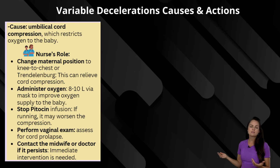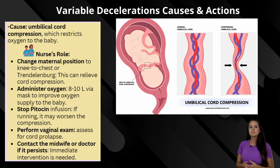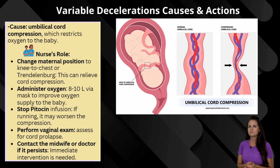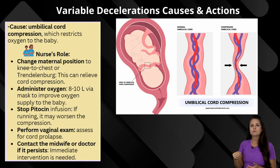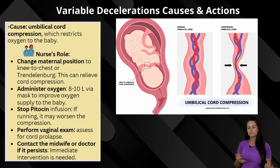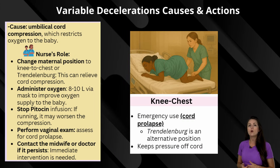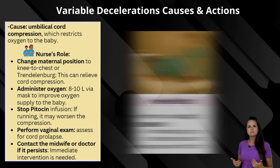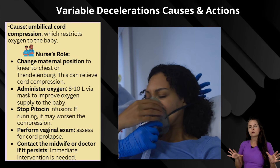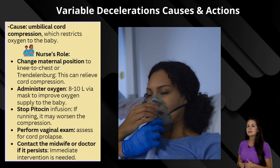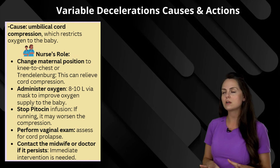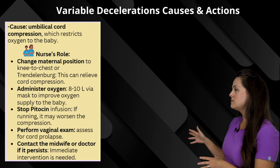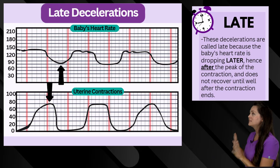What causes this type of deceleration? It's typically caused by umbilical cord compression. When mom is having a contraction, it compresses the umbilical cord — baby's lifeline — which decreases oxygen, stresses baby's heart, and causes the heart rate to drop. This is not a good thing and requires nursing interventions. You want to change mom's position — you can do knee-to-chest or Trendelenburg — to help relieve compression and increase oxygen. Give supplemental oxygen at about 8 to 10 liters via mask. If Pitocin is running, stop it. Perform a vaginal exam to check for cord prolapse and contact the midwife or doctor because immediate intervention is needed.